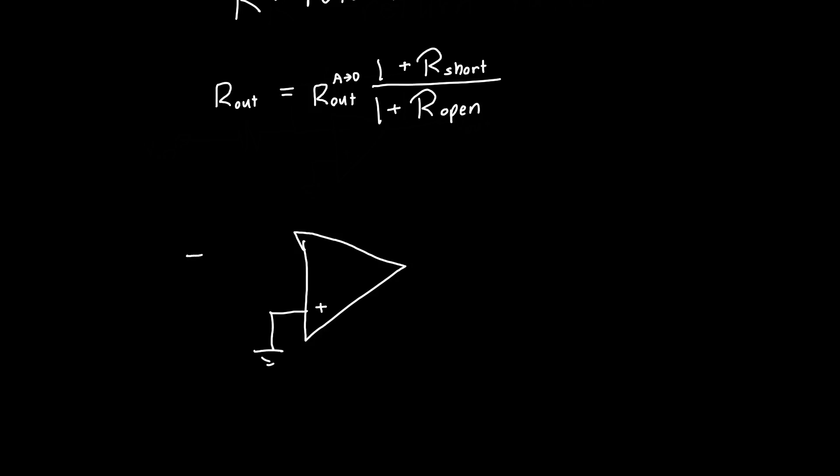So let's just do it for our inverting op-amp system that we had above. So we've got our input voltage, some R1, some RF, and some Vout. And internally we know that this op-amp just looks like a dependent source, and I'm going to ignore the internal output resistance RO for a second because we can bring it back in if we want to. So A times V plus minus V minus.